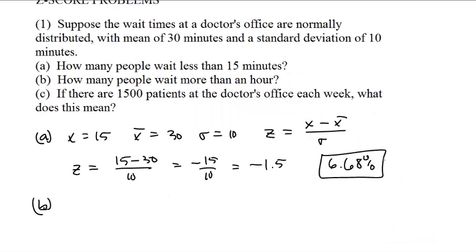So what do we have here? An hour. An hour is, our data point is 60 minutes. And so our z-score is going to be 60 minus 30 over 10, which is 30 over 10, which is 3. We have to look up positive 3 on the z-score chart.